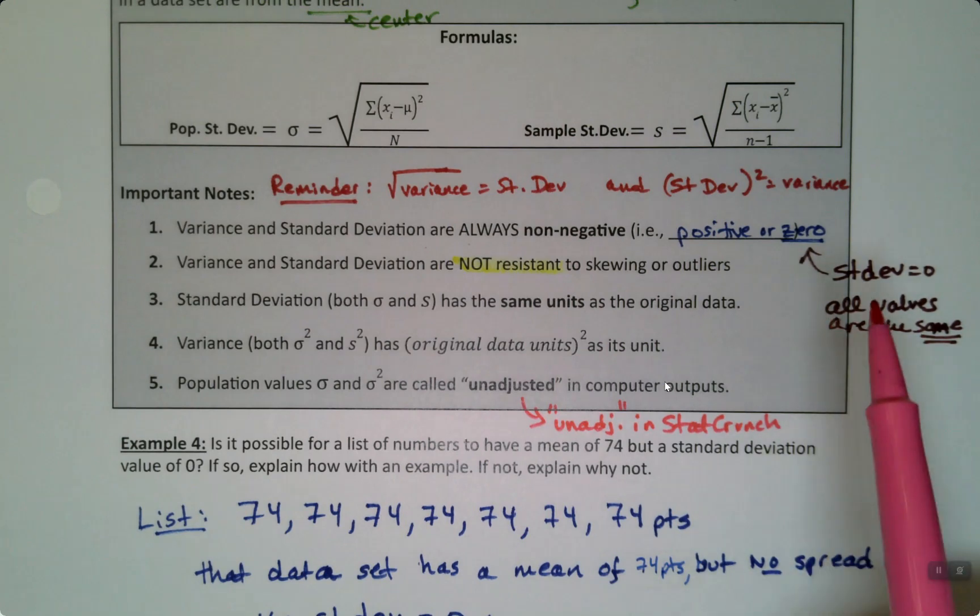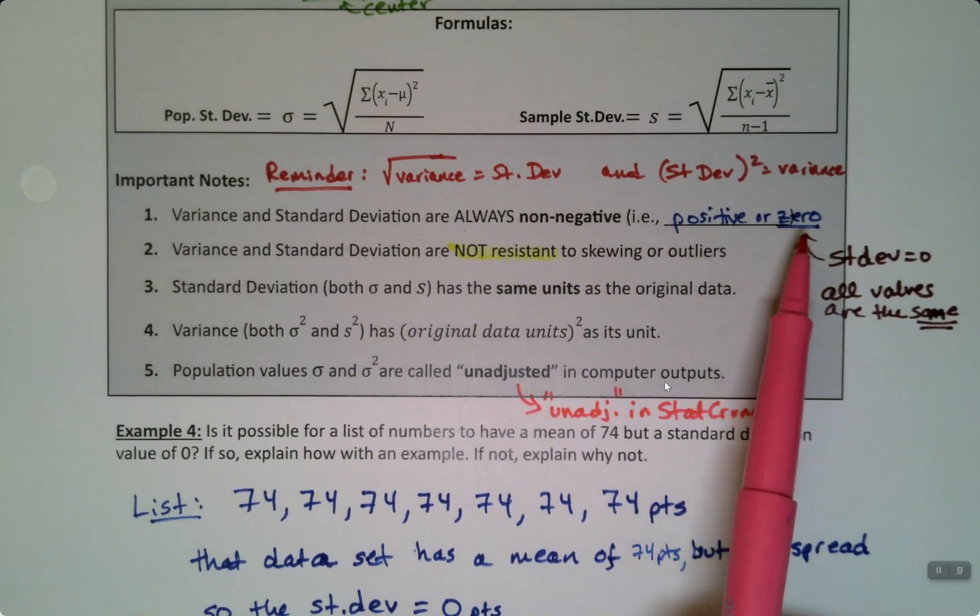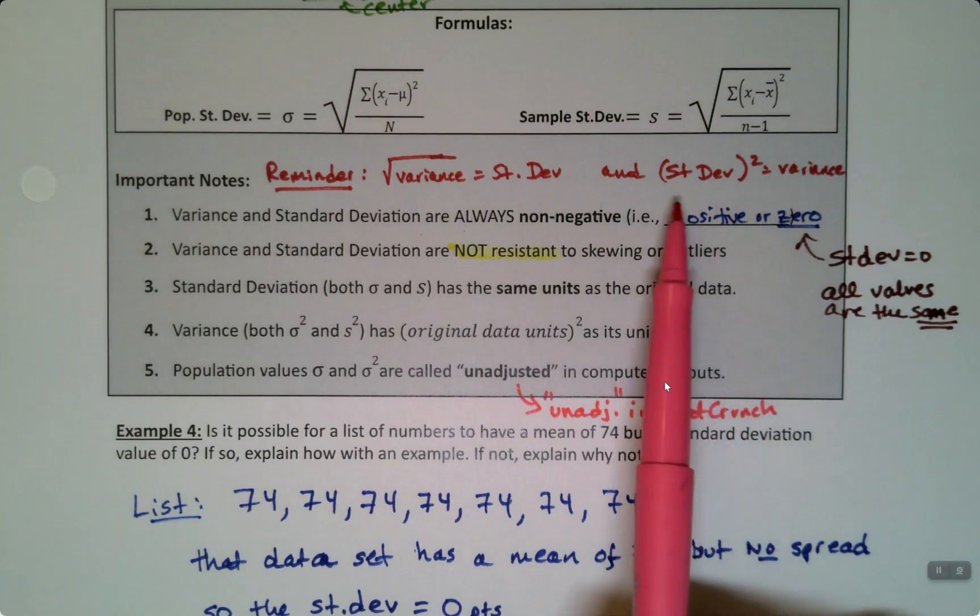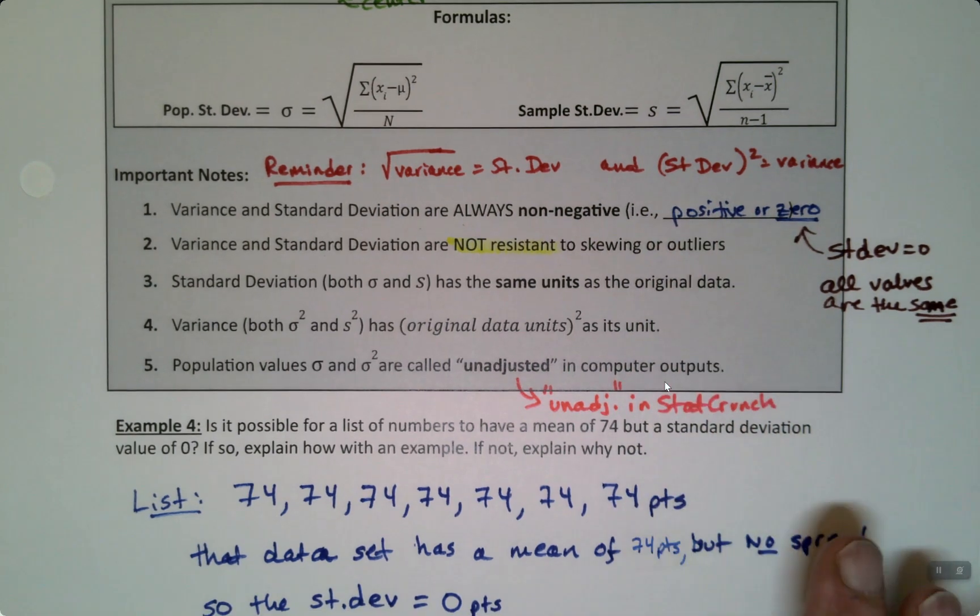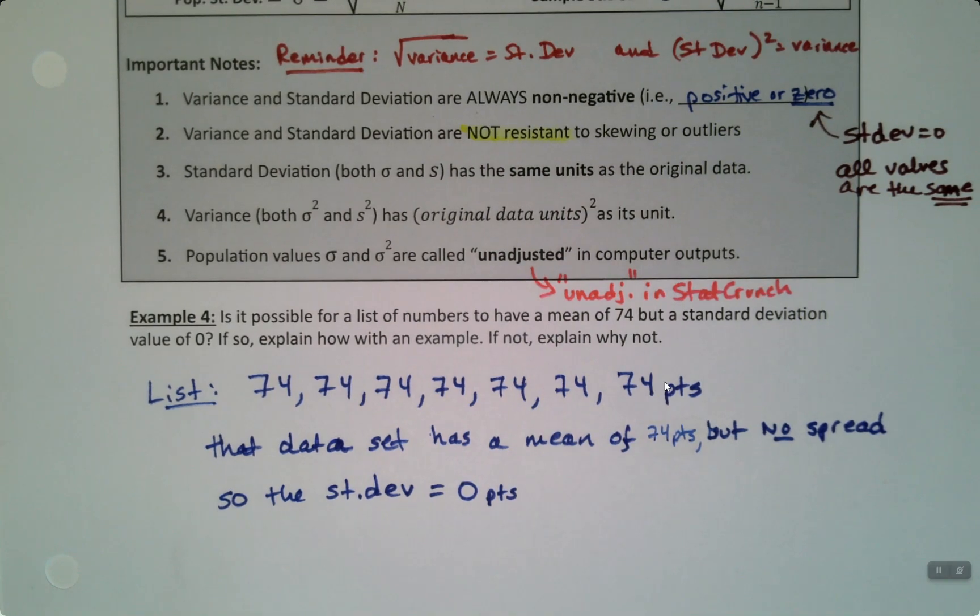It doesn't finish the word. So it's unadjusted in StatCrunch. And you just select that if your data set's a population. So when you're reading it, if it says it's a population, then you can do it. One other thing, just realize that variance and standard deviation are always positive, or zero. Zero is very rare. So they're always going to be positive numbers, and generally they're going to be not zero. Zero is a very rare occurrence.